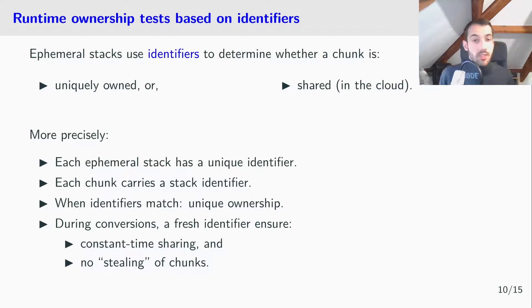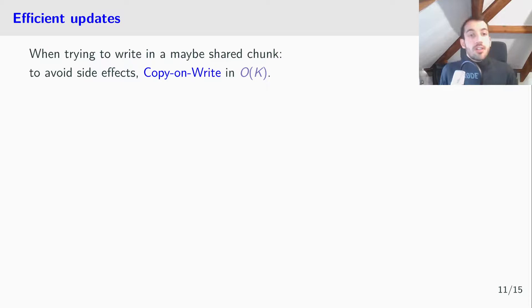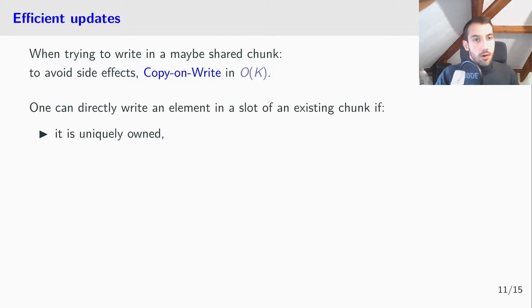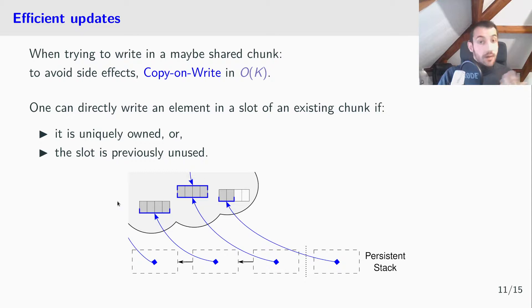And why is this ownership information so important? Because when trying to write in a maybe shared chunk, to avoid side effects, we have to do a copy-on-write. That is, we copy the chunk beforehand to ensure that the write operation will have no side effect. But, of course, we can directly write an element in a slot of an existing chunk if it is uniquely owned. Because we are the only one to use this chunk, we can always directly write in it. But we can be even more efficient, we can always write in a previously unused slot. Indeed, because the slot is unused, it will never produce a side effect even if the chunk is shared.